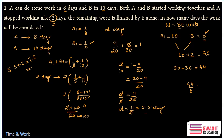B does 8 units per day, so to finish 44 units, B requires 44/8 = 5.5 days. Adding the initial 2 days gives a final answer of 7.5 days — the same result in far fewer steps. The total work method remains very effective even as questions change.